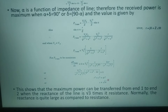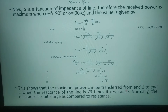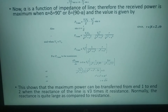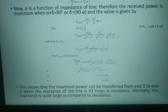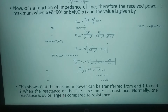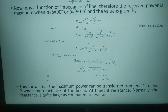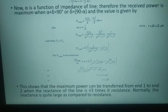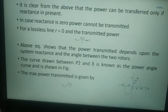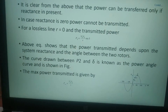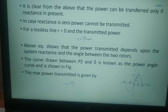Further simplifying, we get X equals sqrt(3)*R. So the maximum power can be transferred from sending end to receiving end when the reactance of the line is root 3 times its resistance. Normally the reactance is quite large compared to the resistance. It is clear that power can be transferred from sending end to receiving end only if reactance is present in the line.